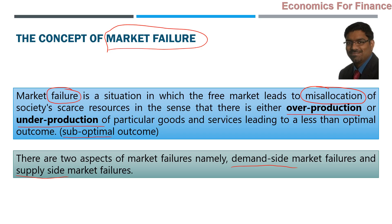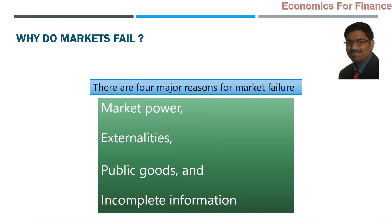If there is overproduction or underproduction of goods and services in a particular economy, which leads to sub-optimal outcomes, that is market failure in a nutshell. What are the reasons for market failure? There are four reasons broadly: market power, externalities, failure of markets to provide public goods, and incomplete information. These are the four reasons because of which markets can generally fail.